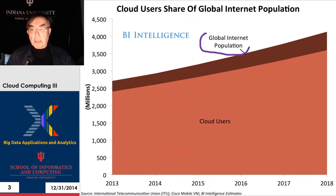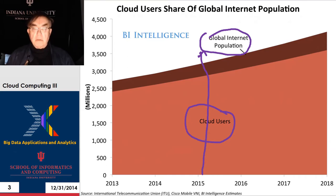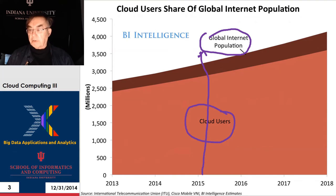Here's the first slide. It has two lines on it: the global internet population and the fraction of those who are cloud users, as of 2015. At that time, the global internet population was around 3 billion, and cloud users were about 15% of that. So the vast majority of the total internet population, which is about half the world's population, are using clouds.